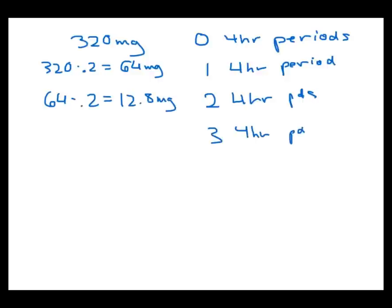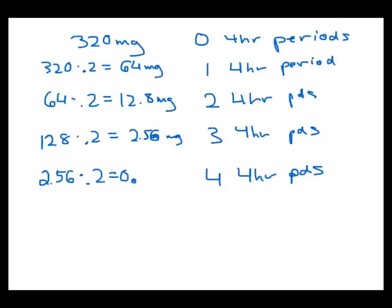After three four hour periods, how much is going to be left? Well 12.8 times 20 percent. 20 percent of whatever was there, that's 2.56 milligrams. We're almost there. After four four hour periods, how much is left? Well again we're going to take the amount that was left at the end of the previous four hour period, that's 2.56 milligrams, and multiply that by 20 percent because that's according to her specs, according to her weight, that's what she keeps. So that's 0.512 milligrams. And finally at the end of the fifth four hour period, we're going to have 0.512 times 20 percent left and that's finally the answer here: 0.1024 milligrams.